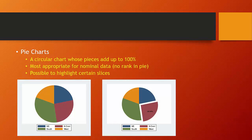A pie chart is a circular chart whose pieces add up to 100%. This is especially good for nominal level data where there's no rank order between the data categories. And it's possible to highlight or explode certain pieces for emphasis if we want to focus on one particular category that's of interest to us.